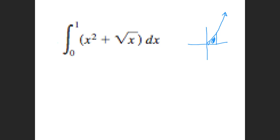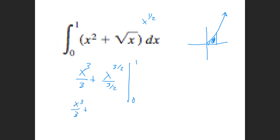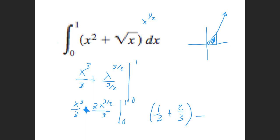Now I'm going to take the integral. That's going to be x to the third over 3 plus — the square root of x is x to the 1/2, so if I add 1, I end up with x to the 3/2 over 3/2 from 0 to 1. I'm going to simplify: x cubed over 3 stays, and I rewrite the second term as 2x to the 3/2 over 3 from 0 to 1. Plugging 1 in: 1 cubed is 1, so that's 1/3 plus 2/3. Minus plugging 0 in — that's 0. So 1/3 plus 2/3 is 3/3 or 1.